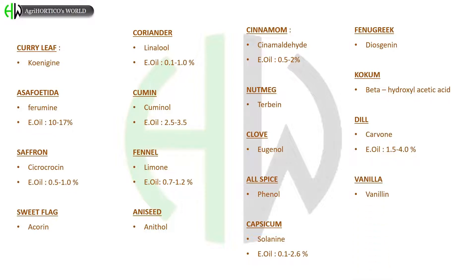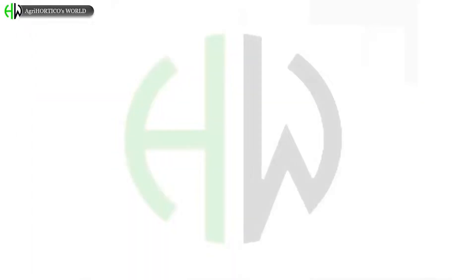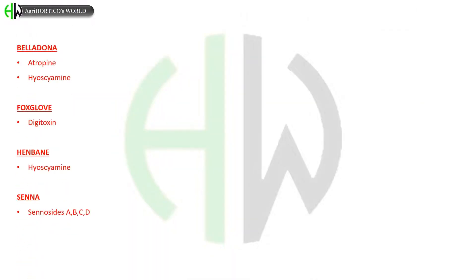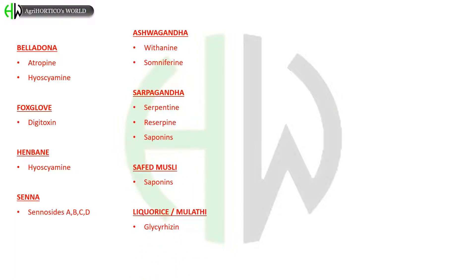In belladonna, atropine and hyoscyamine are present. In foxglove, digitoxin is seen. In henbane, hyoscyamine is present. In senna, senosides A, B, C, D are present. In ashwagandha or winter cherry, the major constituents are withanolides and somniferine. In sarpagandha, serpentine, rhizopine and saponins are found.